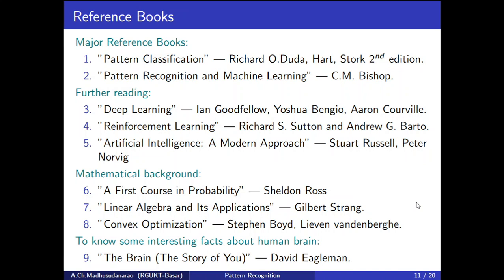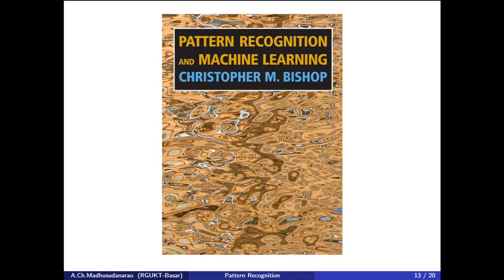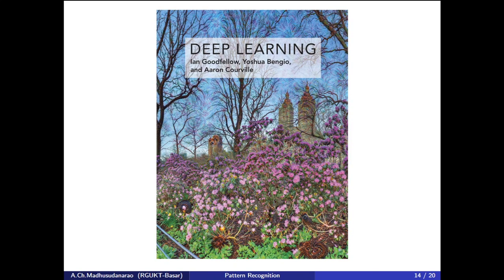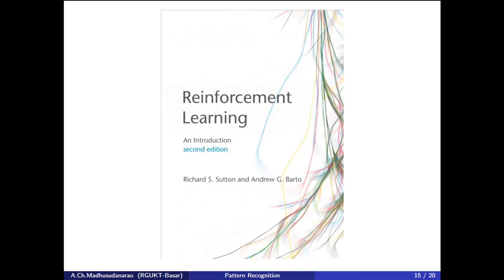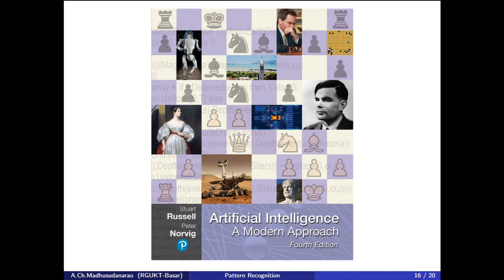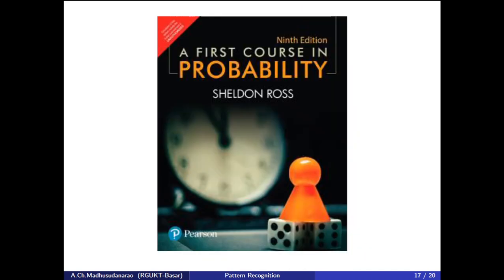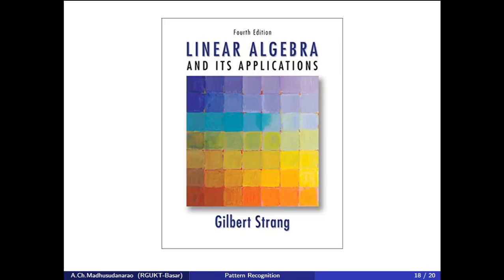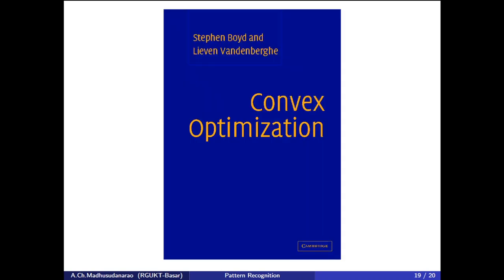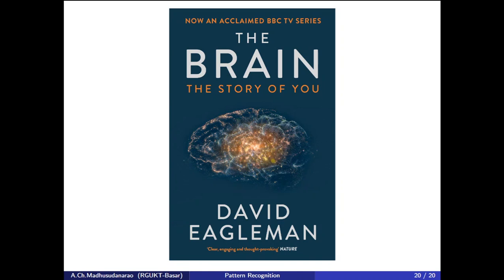To know some interesting facts about the human brain, you can go through The Brain: The Story of You by David Eagleman — it reads almost like a novel. The cover pages of these books are as follows: Pattern Classification by Duda and Hart, Pattern Recognition by C.M. Bishop, Deep Learning by Ian Goodfellow, Reinforcement Learning by Sutton and Barto, Artificial Intelligence by Russell, A First Course in Probability by Sheldon Ross, Linear Algebra by Gilbert Strang, Convex Optimization by Stephen Boyd, and The Brain by David Eagleman.